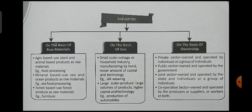On the basis of size, industries are of two types. The first is small-scale industry, which also includes cottage industry. Cottage industry is that industry in which only household members are involved, less capital is used, and less technology is used.